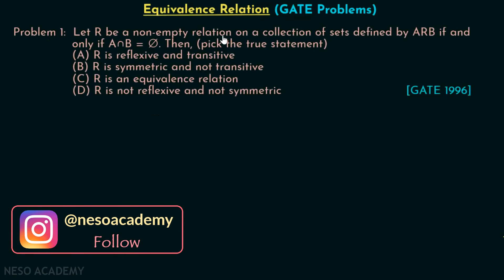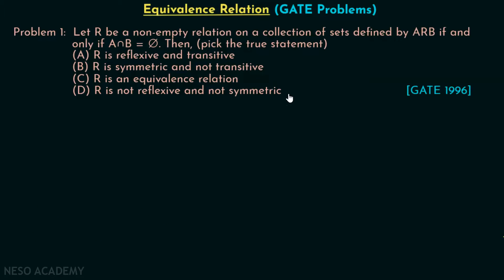Let R be a non-empty relation on a collection of sets defined by A R B if and only if A intersection B is equal to the empty set. You have to pick the true statement from the given options. This question has been asked in GATE 1996. I would encourage you to pause the video and try to answer this question on your own.